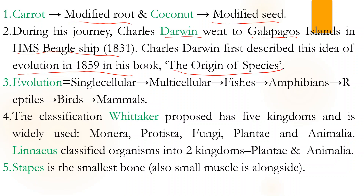In terms of evolution, first single-cellular organisms developed, then multicellular organisms developed from them. After that came fish, then amphibians, then reptiles, then birds, and finally mammals developed.